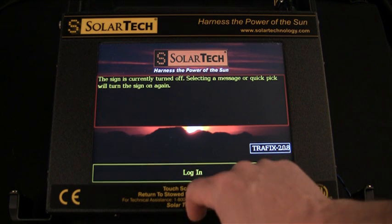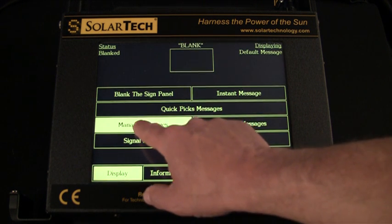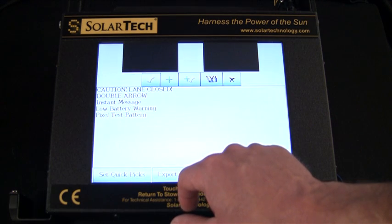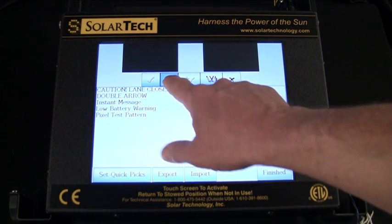Begin by logging into the controller. Then, press Manage Messages, then press the green plus icon.